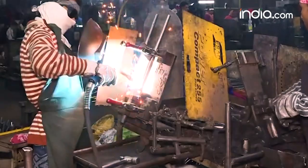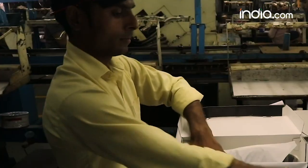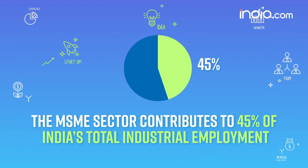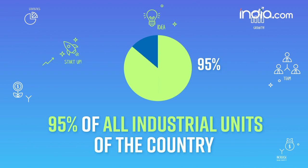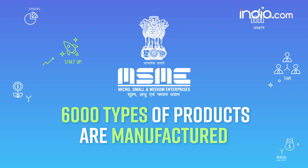MSME Industries — that is the micro, small and medium enterprises — are the backbone of the Indian economy. The MSME sector contributes to about 45% of India's total industrial employment, 50% of India's total exports, and 95% of all industrial units of the country. More than 6,000 types of products are manufactured in MSME industries.